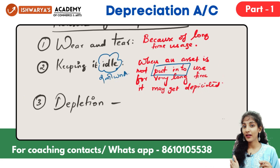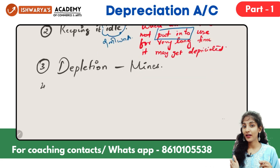If you think about a mine — like a gold mine — as you extract the gold, the value of the mine decreases. That reduction in value from extraction is called depletion. So depletion applies to assets like mines and natural resources, and it is considered a form of depreciation.